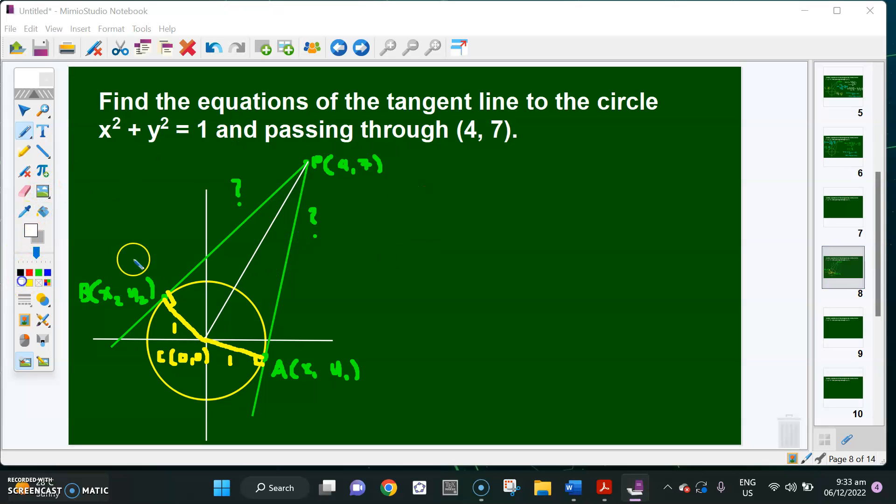So what we can compute here actually: we can get the length of CP, which is square root of (4 minus 0) squared plus (7 minus 0) squared. That is square root of 16 plus 49, which is square root of 65.